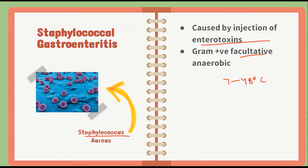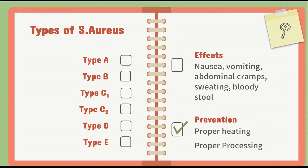S. aureus produces six types of toxins: Type A, B, C1, C2, D, and E, which grow at different temperatures within the range of 7 to 48 degrees Celsius. Effects caused by S. aureus include nausea, vomiting, abdominal cramps, sweating, and bloody stools.